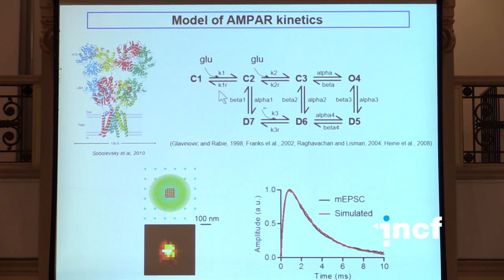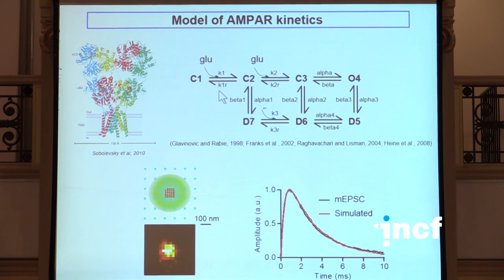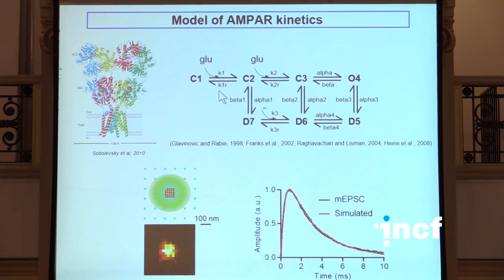So we used that kinetic model based on the rate constants that had been published in the past, including by us, and started to look at the properties of the synaptic current evoked by release of a single vesicle. We released around 3,000 glutamate molecules and took a matrix of receptors with a nano cluster comprising various numbers of receptors - most of the time five by five - and mimicked recorded miniature EPSCs, adapting the parameters so that we get a good fit by simulation of the normal excitatory post synaptic currents.